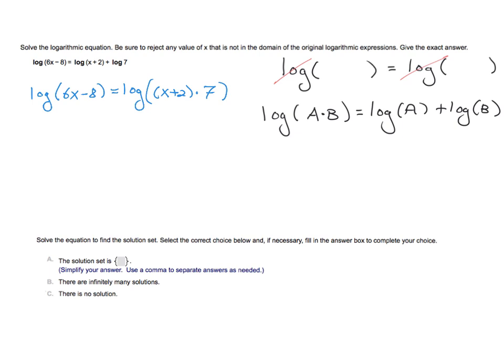So now what I can do is ignore the logarithms, essentially canceling them from the problem. And what is left over is six x minus eight. And on the other side, I have x plus two, multiplied by seven.